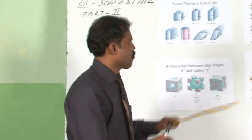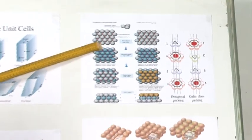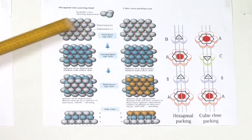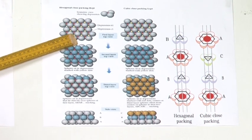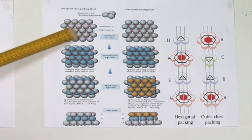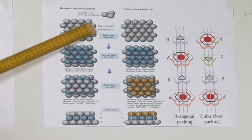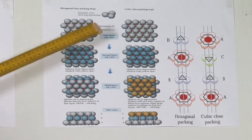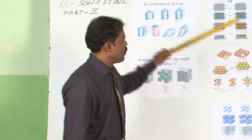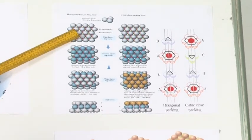Take a proper look at the way the particles are arranged here. This is the first layer of arrangement. When you arrange the particles like this, two sets of voids are created in the first layer. One set of voids is marked yellow and the second set of voids is marked red.